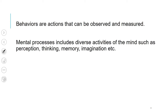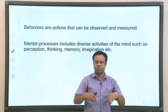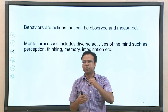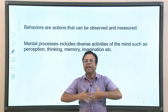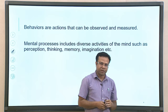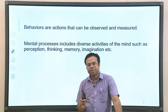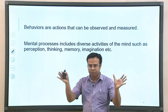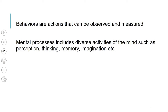So the idea when we call psychology a science or scientific study is that psychology tries to maintain these parameters or characteristics in their studies. Behavior in psychology means observable behavioral actions which can be measured — whatever actions that can be observed, like body movement or speech. Mental processes is a broad term that includes the diverse activities of the mind, such as perception, thinking, memory, imagination, and so on.